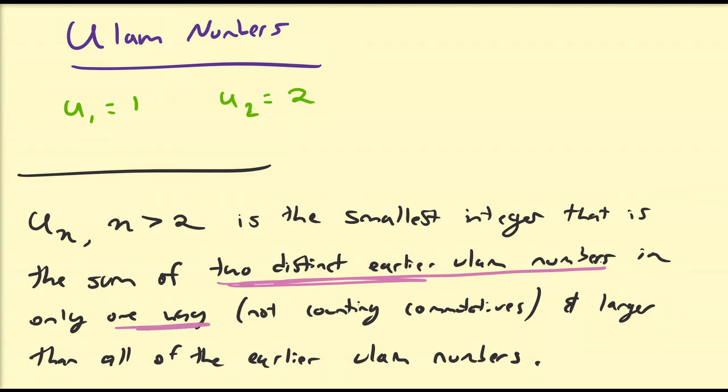And only one way. So if you have, say, 4 plus 2 and 5 plus 1, that is two different ways of obtaining 6. So that won't count. And we're not going to count commutatives. So 5 plus 2 and 2 plus 5 is going to count as the same exact thing.